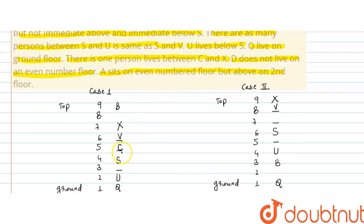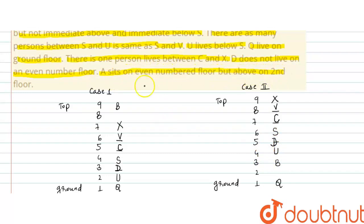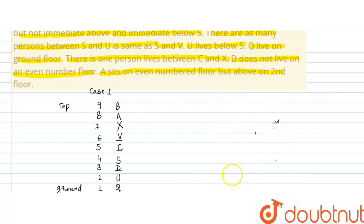यहाँ पर V की position होगी। There is only one person living between C and X — C और X के बीच में one person है, यहाँ पर C की position होगी। इस case में भी C और X के बीच में one person है, यहाँ पर C की position होगी। D does not live on an even number floor — D even number floor पे नहीं है, यहाँ पर 8 पे नहीं हो सकता, D की position 3rd floor पे होगी। A sits on even number floor but above the 2nd floor — A की position 2nd floor से ऊपर होनी चाहिए और even number होनी चाहिए। Case 2 में 2nd floor vacant है लेकिन A को 2nd से ऊपर रखना है — यह case discard हो जाएगा, यह possible नहीं है।